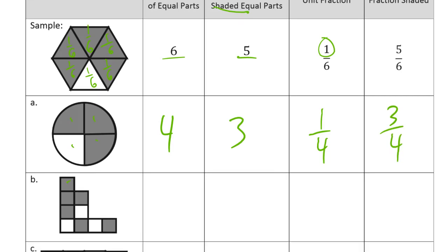Looking at this piece here, we have one, two, three, four, five, six, seven, eight, nine — there are nine squares here, so nine equal parts. And how many are shaded? One, two, three, four, five, six of them are shaded. Our unit fraction, since there are nine equal parts, is one-ninth. And since there are six shaded, the fraction shaded is six-ninths of the shape.